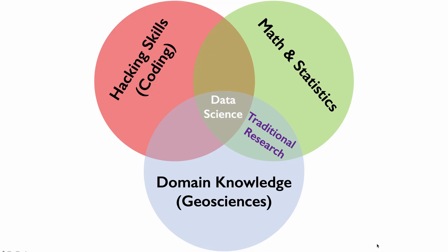Data science by its very nature, intersecting three different domains, is a multi-disciplinary science. So if we know what data science is — this skill set where you combine your own domain knowledge with statistics, math, and coding — what exactly is machine learning? Machine learning is really at the intersection between math, statistics, and hacking or coding skills. So machine learning by its very definition is much more of a coding and mathematical approach.